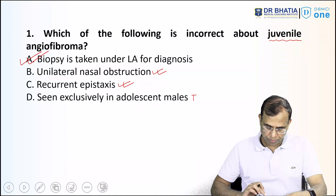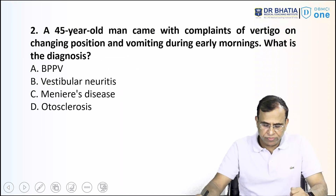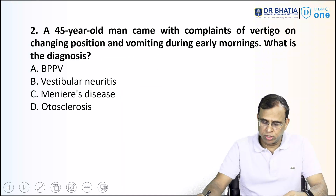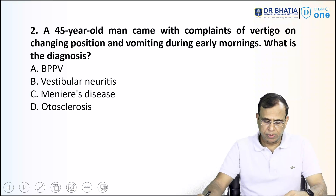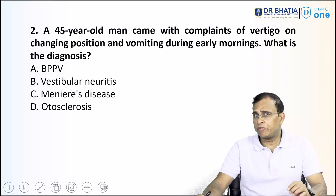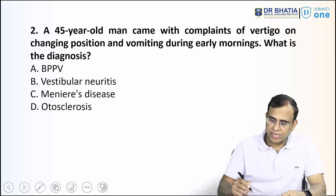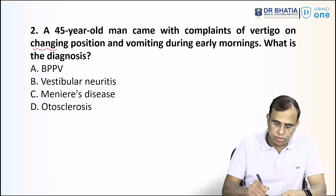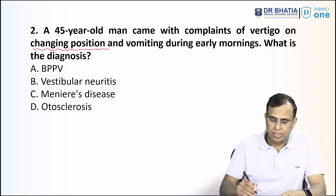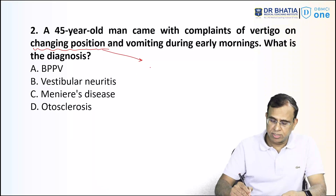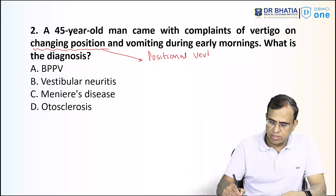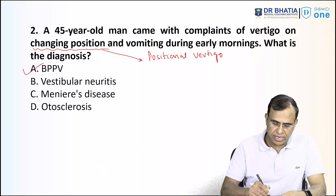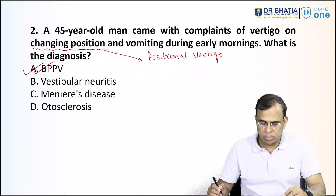Question number two: a 45-year-old man came with complaint of vertigo on changing position and vomiting during early mornings. What is the diagnosis? Options are BPPV, vestibular neuronitis, Meniere's disease, or otosclerosis. The giveaway in this question is that the patient has vertigo while changing the position of the head — this is called positional vertigo, and positional vertigo is typically seen in BPPV, benign paroxysmal positional vertigo.